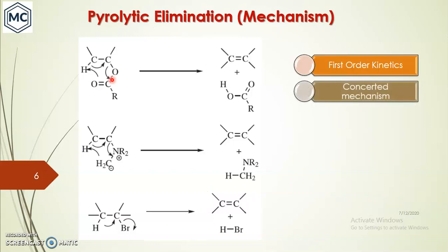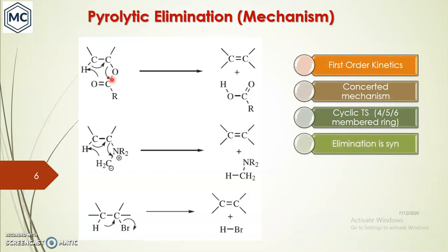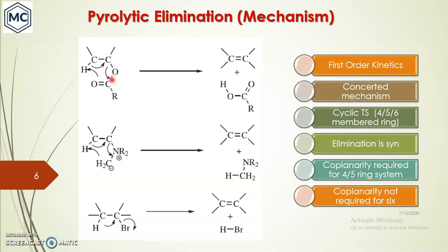All these reactions follow first-order kinetics and a concerted cyclic mechanism — proceeding through a cyclic transition state involving four-, five-, or six-membered rings. Elimination is syn, meaning hydrogen and the leaving group are eliminated from the same side. For four- or five-membered rings (lower rings), coplanarity is required, but for higher-membered rings such as six-membered, coplanarity is not strictly required and slight deviation from planarity is acceptable.